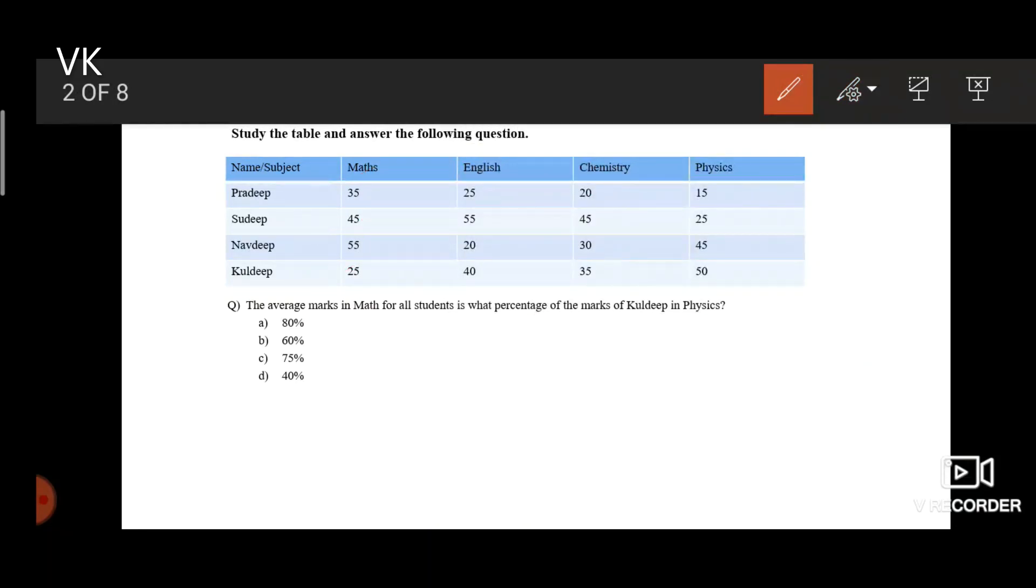So if we read the question once again and interpret the data, 40 is what percentage of marks of Kuldeep in physics? Kuldeep got 50 marks in physics. This gives us when 2 goes this side, it becomes 80. Hence option A is the final answer.